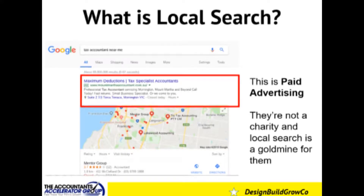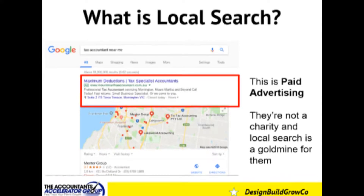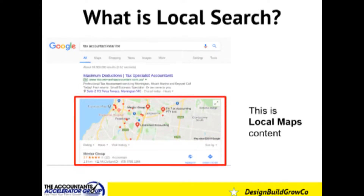Here is a search I've pre-prepared: 'tax accountant near me.' I'm going to run you through the different components of a local search results page. This first section highlighted in red is paid advertising — the rivers of gold for Google. The business shown here is paying for the privilege of being seen before anyone else. Every time someone clicks on that ad, that accounting firm is paying for the privilege of that click coming to them.